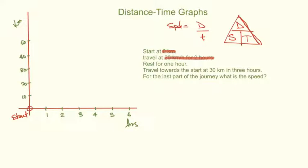I don't particularly like the triangle, but it comes in quite handy when you can't be bothered to do the rearrangement. Speed is distance over time. If I want to find the distance, you block off distance and what you've got left is speed times time. If you're trying to calculate time, you block time off and it's distance on top of speed. Quite frankly, I'd much rather you just focused on doing the rearrangement algebraically.